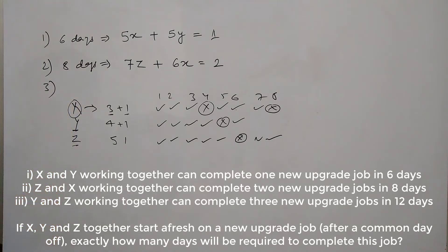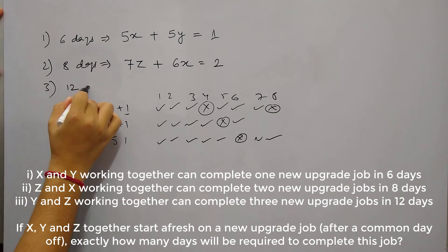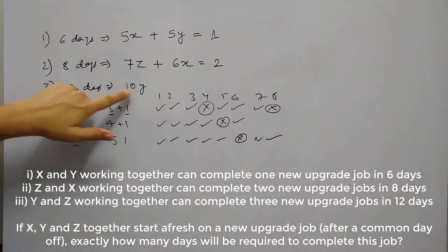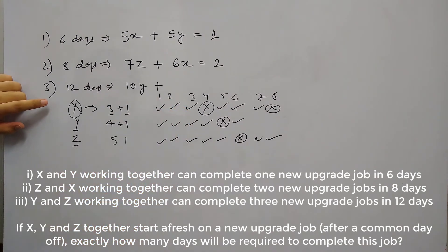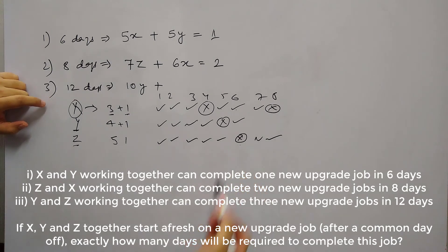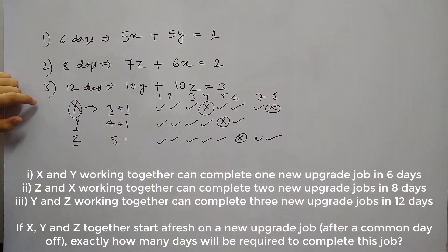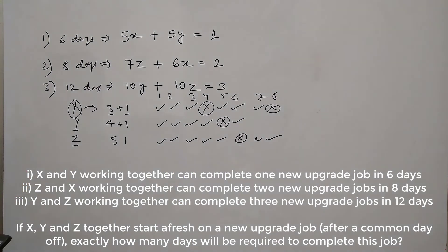Now in 8 days Z and X can complete 2 unit of work. So we have to put here 2. And there is 3rd statement in the question which says Y and Z working together can complete 3 new upgrade jobs in 12 days. So Y and Z are working for 12 days. So we can put equation here. So Y working for 12 days. Out of these 12 days Y will work for 10 days because every 5th day is leave for Y. So Y will work for 10 days and total work done by Y is 10Y. Plus Z will work for again 10 days because 6th day was leave for Z and again the 12th day will be leave for Z. So Z will also work for 10 days and total work done by Z is 10Z. And in this time they have completed 3 unit of work. So this is the information given in question that we have translated into equations. Now if X, Y and Z together start up fresh on a new upgrade job after a common day off, exactly how many days will be required to complete this job.